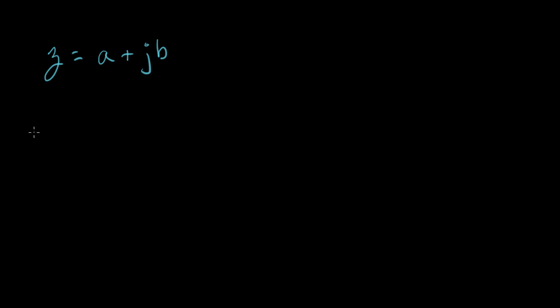So now what I want to do is, what happens if we multiply z by j one time? j times z, and that equals j times a plus jb. And let's just multiply it through. Equals j times a plus j times j times b.